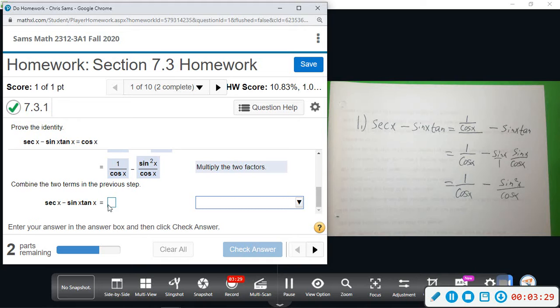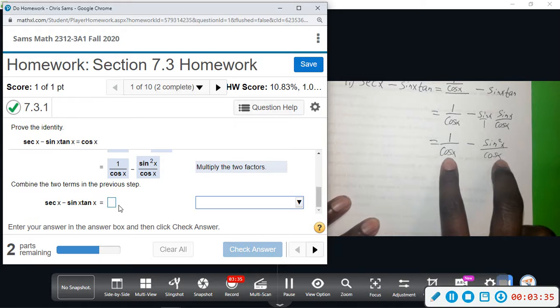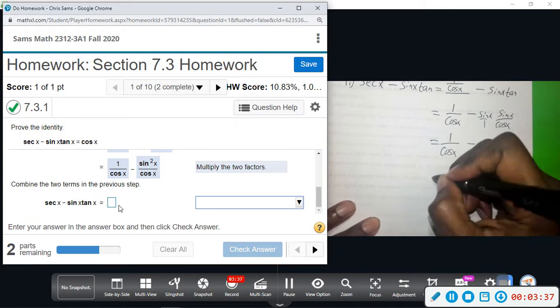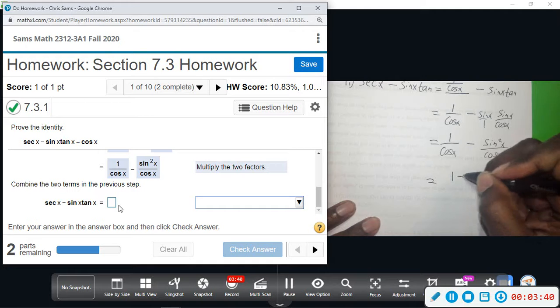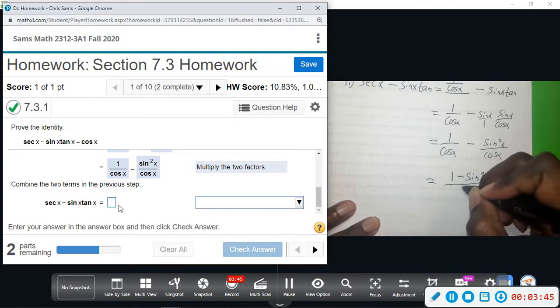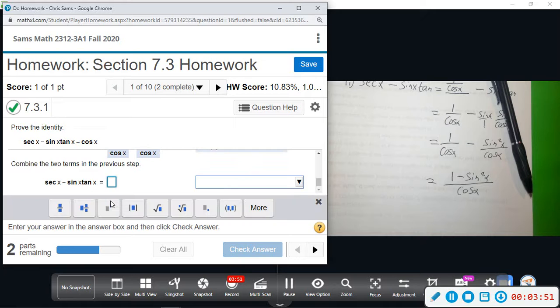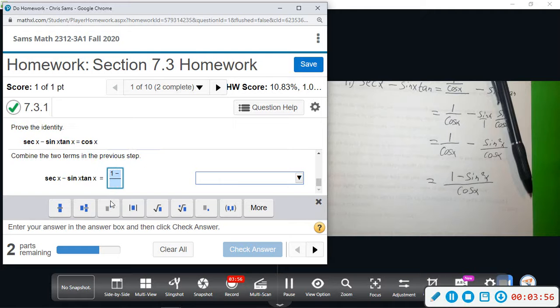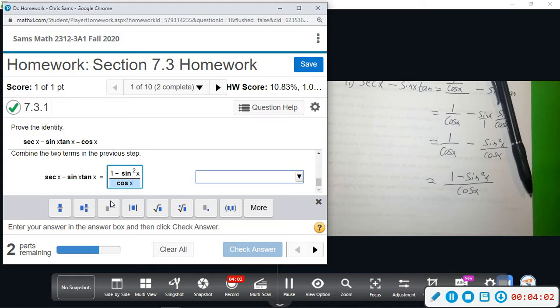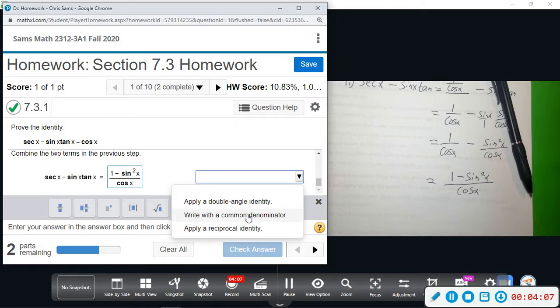Alright, now we're going to simplify. We've got two parts left. Since we have the common denominator, we can combine these two as one fraction. We will have 1 minus sine squared x over cosine of x. So this is 1 minus sine squared x divided by cosine x, by writing with a common denominator.